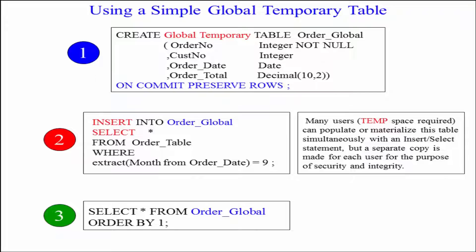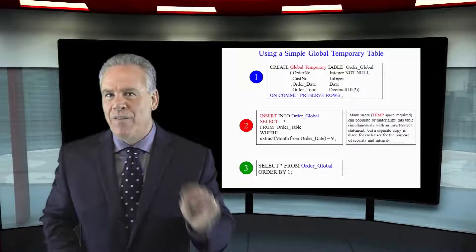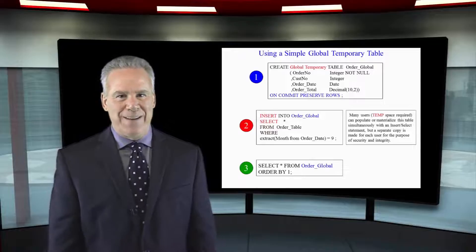Then you populate it with your insert select and now it is materialized with your temp space, and then you can query it all session long and each query uses your spool space. That's the concept of a global temporary table.